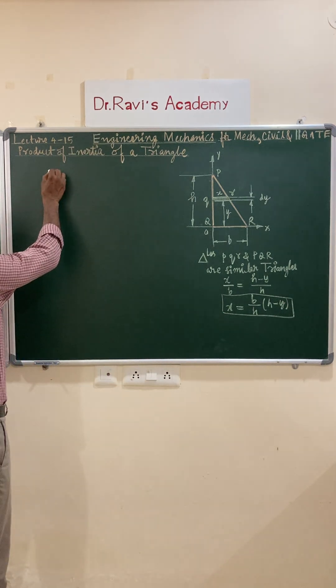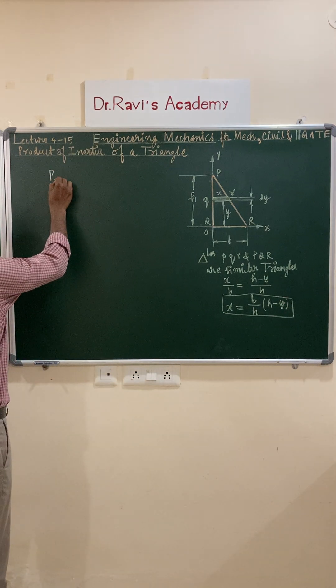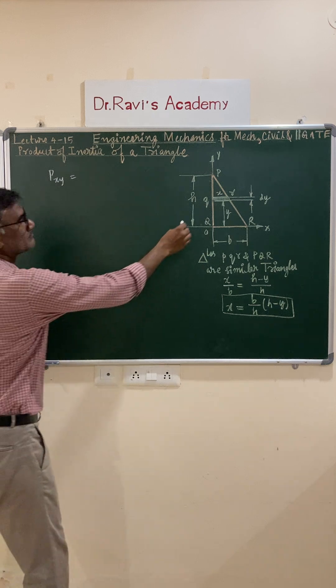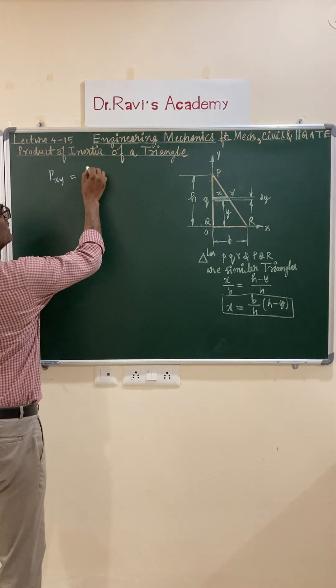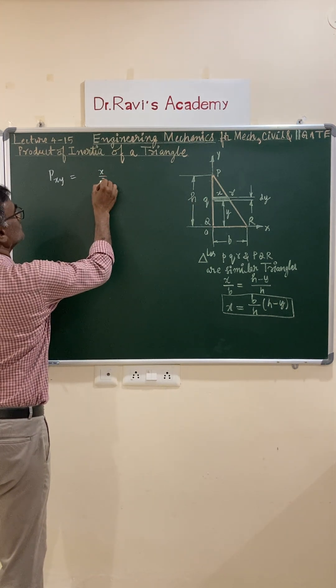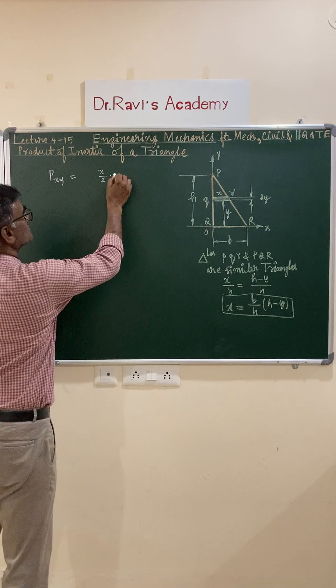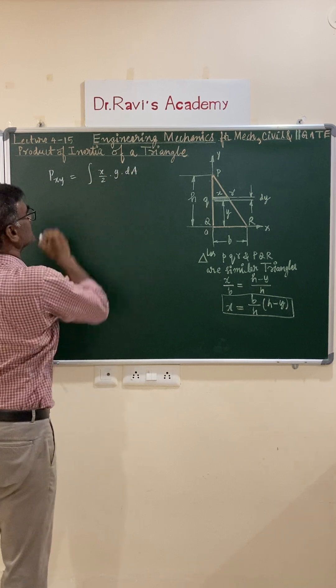Now let us write down the expression for product of inertia. The symbol is Pxy equals the elemental distance x by 2, because its width is x, times y into da, elemental area integral.